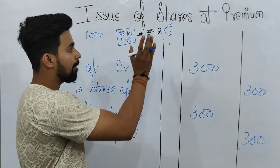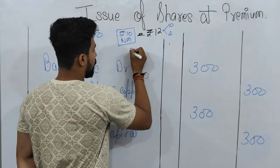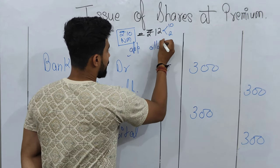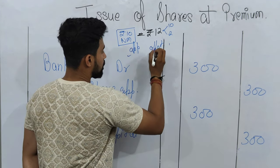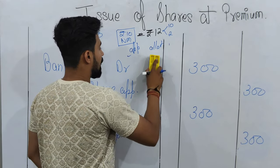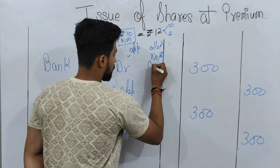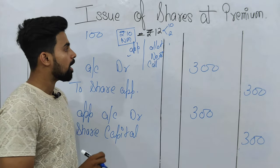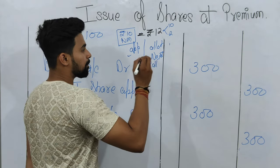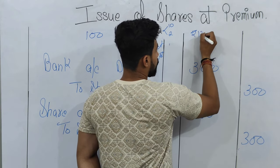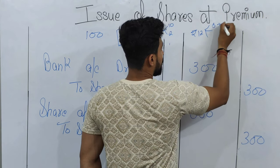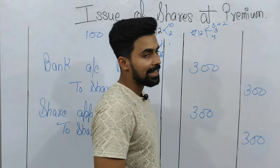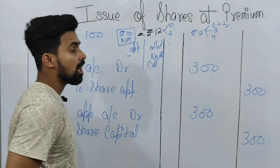There are two cases for the premium amount. A company can call the premium amount along with application, or along with allotment, or any next call. In the first case, if the company has called the securities premium along with application, the price division for Rs. 12 divided in 3 calls is: 3 plus 2 (application), then 3 (allotment), then 4 (first call) — that is 10 for the share and 2 for the premium, with premium added at the application call.